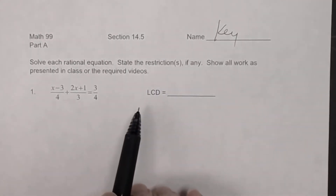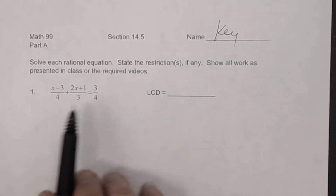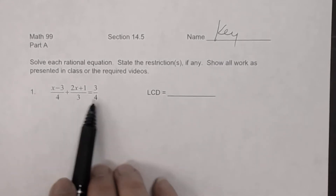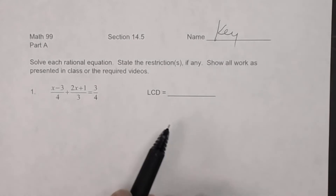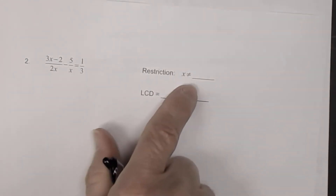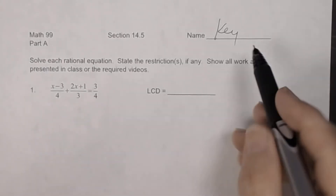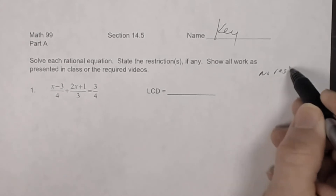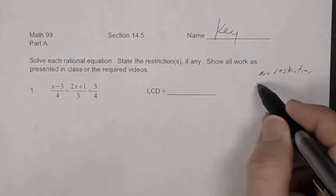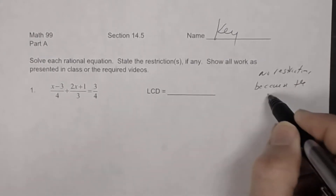There are no restrictions for number one because the denominator is never going to be zero. Looking at the denominators — four, three, and four — they're never zero. That's why in number two you see a restriction listed, but in number one you don't.